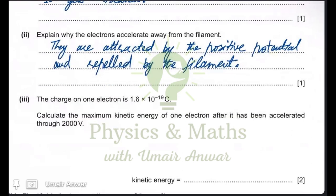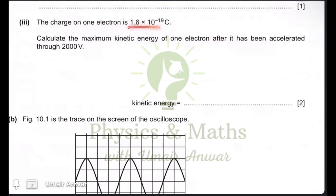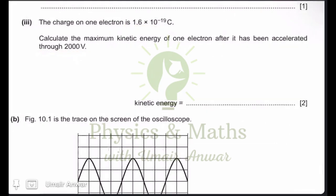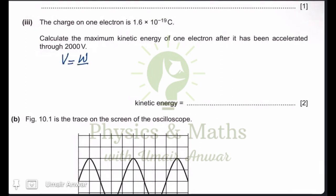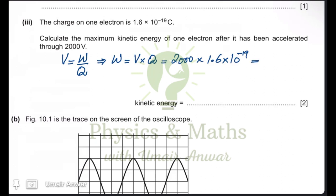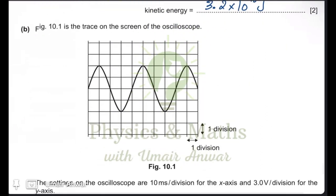The charge on one electron is 1.6 × 10⁻¹⁹ coulombs. To calculate the maximum kinetic energy of one electron after being accelerated through 2000 volts, we use the formula: voltage equals work done divided by charge. Therefore, work done — which equals maximum kinetic energy — is the product of voltage and charge: 2000 × 1.6 × 10⁻¹⁹ = 3.2 × 10⁻¹⁶ joules. This kinetic energy gained equals the work done on the electron.